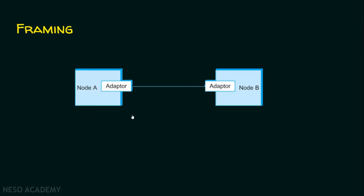Suppose there are two nodes. This node can be a computer, a router, or a switch. This is node A and this is node B. Every node will have an adapter, and this adapter will be sending the data, whatever it receives from the data link layer, into signals. This signal will flow through the cable or medium and is received by the physical layer of node B.